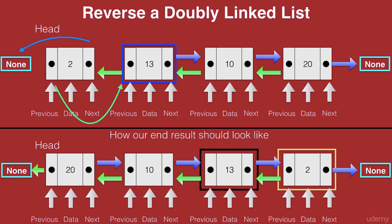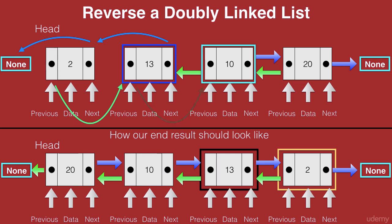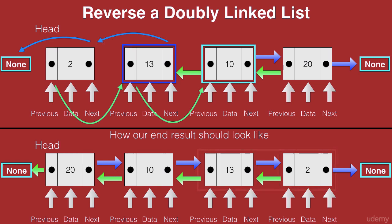Before swapping, let's save 10 in a temporary node. Then we remove the connection from 13 to 10 and establish the next as the previous of 13. We remove the connection from previous of 13 and establish that with 10. Now the previous of 13 points to 10 and the next of 13 points to 2 — same as in the reversed list. We can mark this node as complete.